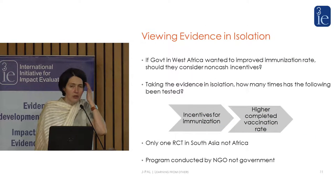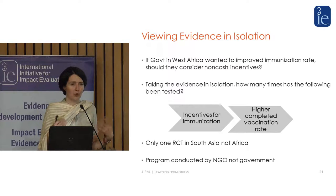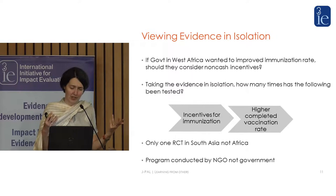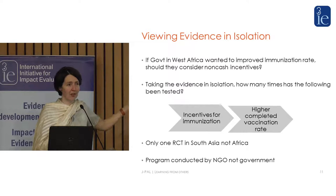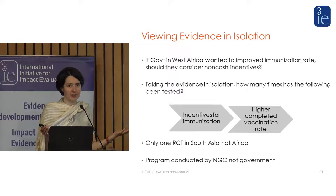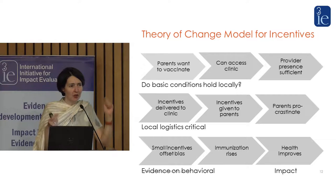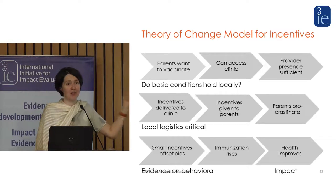If I looked at this evidence in isolation and I was working with a government in West Africa — which I am — facing a collapse in immunization rates because of Ebola, to what extent could I say they should learn from this? If I take this in isolation, I'd say it was a study with an NGO in a different continent, completely different infrastructure, only one RCT — why would I think this result would replicate? I want to persuade you that's not the right way to think about this. Actually, there's an enormous amount of evidence to think this might replicate in Sierra Leone.